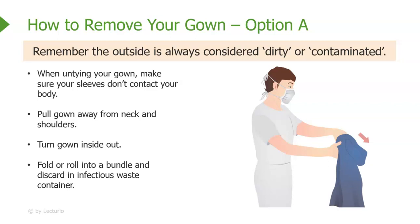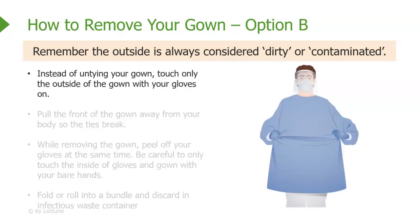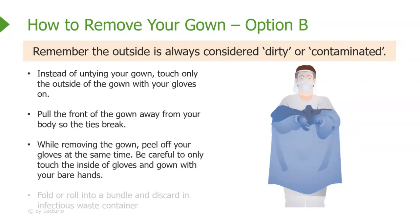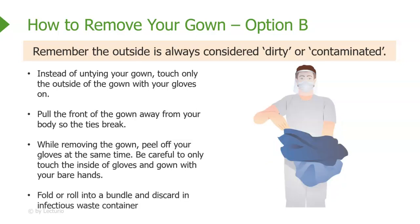Here's a second option for gown removal. Instead of untying, touch only the outside of the gown with your gloves still on and pull the front of the gown away from your body so the ties break. While removing the gown, peel off your gloves at the same time, being careful to only touch the inside of the gloves and gown with your bare hands. Fold or roll the gown and gloves into a bundle and discard in an infectious waste container.